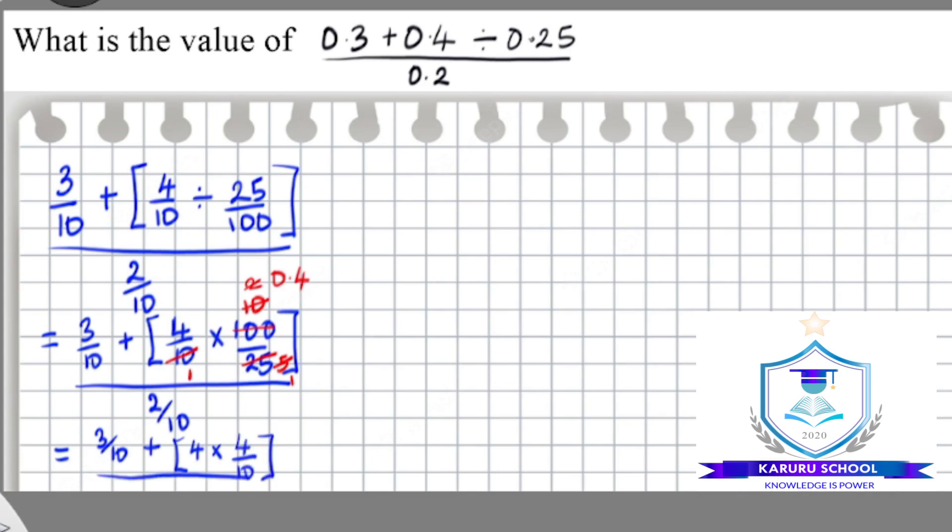So further simplification gives us 3 over 10 plus 16 over 10 divided by 2 over 10. Since the denominators are the same, we can add the numerators straightforward. So we have 3 plus 16 gives us 19 over 10 divided by 2 over 10.